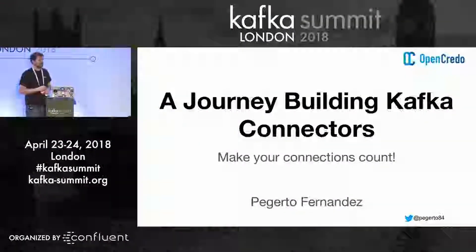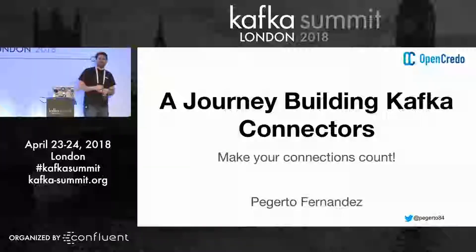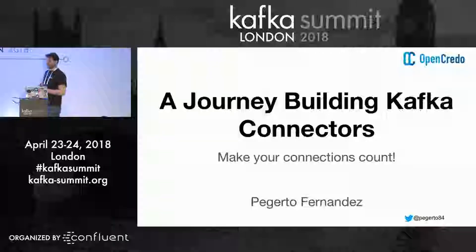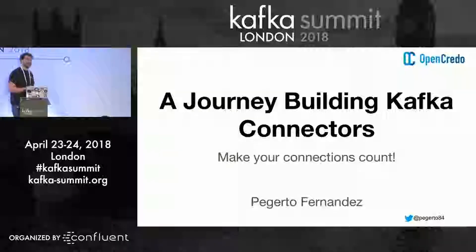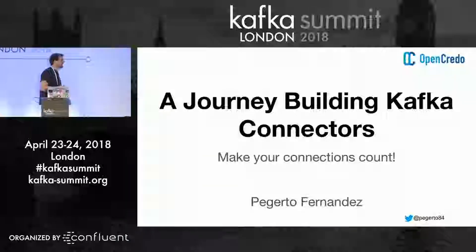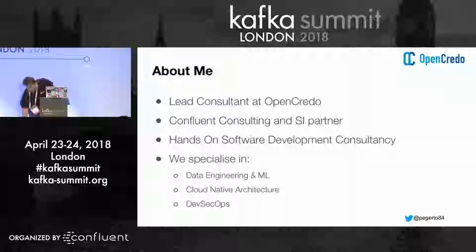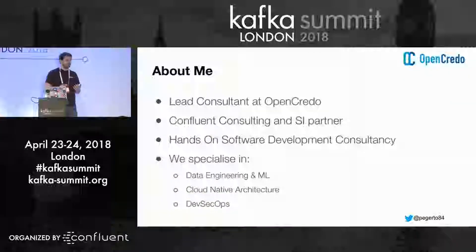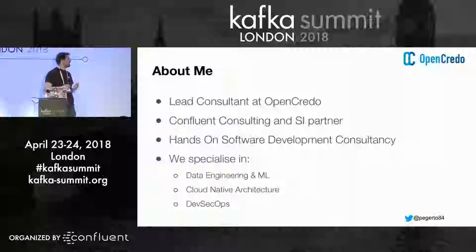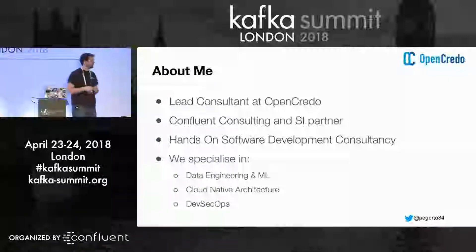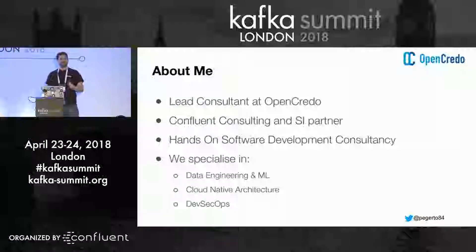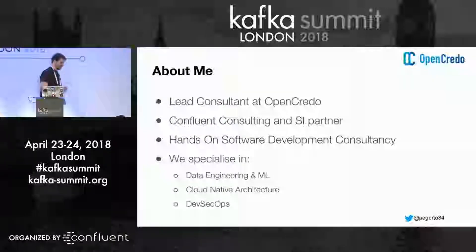For those who were here in the previous talk Robin did about building pipelines — there's some overlap, but this is a different approach. I'm talking about building pipelines by writing code. About me: I'm an elite consultant at a company here in London called Open Credo. We specialize in data engineering and machine learning, as well as cloud architecture, DevOps, and security. I've been working with Kafka for four years.